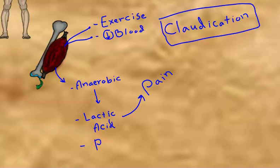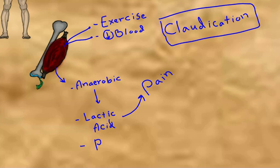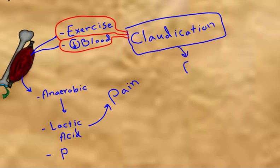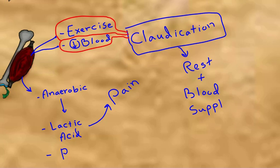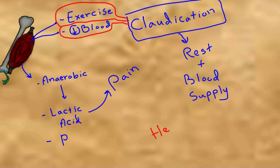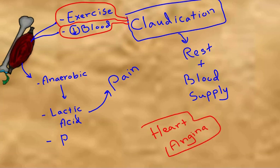Claudication is muscle pain due to a clogged blood supply to the muscle, which increases in intensity with mild to moderate exercise, such as walking a short distance. Bed rest and re-establishing blood supply is the key treatment. Angina pectoris is severe chest pain due to a clog in the coronary artery of the heart, which also increases in intensity with higher cardiac activity.